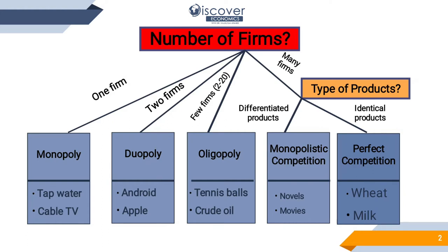Let's take the example of perfect competition. Suppose there are twenty farmers and they are all growing wheat crop. If I ask them to bring one kilogram of wheat each and pour it all into one big pot and mix it up, then ask them to pick their own grains back — they definitely cannot do it. Because all the grains are similar, and once shuffled they cannot identify which grain came from their field.